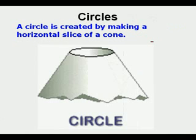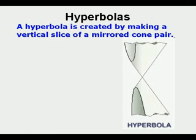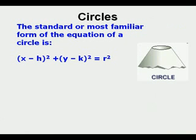A circle is created by making a horizontal slice of a cone. An ellipse is created by making an oblique slice of a cone. And a hyperbola is created by making a vertical slice of a mirrored cone pair.